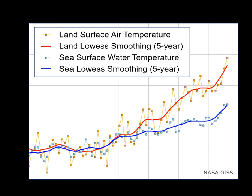El Niño is defined by prolonged differences in Pacific Ocean surface temperatures when compared with the average value. The accepted definition is a warming or cooling of at least 0.5 degrees Celsius averaged over the east-central tropical Pacific Ocean. Typically, this anomaly happens at irregular intervals of 2–7 years and lasts 9 months to 2 years, with an average period length of 5 years. When this warming or cooling occurs for only 7–9 months, it is classified as El Niño–La Niña conditions; when it occurs for more than that period, it is also classified as El Niño–La Niña. The sign of an El Niño in the sea surface temperature pattern is when warm water spreads from the West Pacific and the Indian Ocean to the East Pacific.